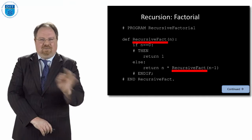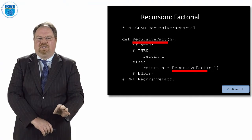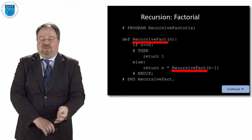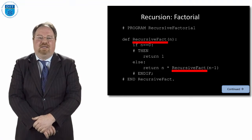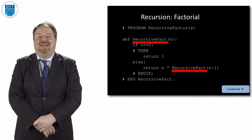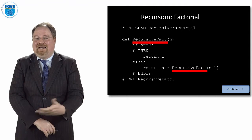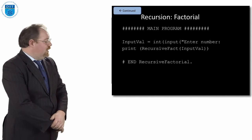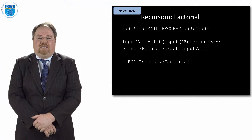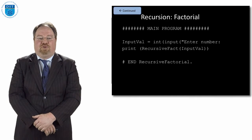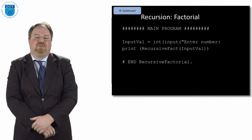The Python way of doing recursion is very simple. You just call the method and later use the same method name again. It's a very effective way of doing recursion — almost exactly like the pseudocode. The main program just gets a value from the user and then prints out recursive_fact of that value.